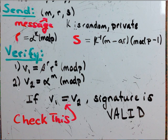The second calculation is V2 = alpha^M mod P. This is all public information because alpha and beta are public, and R, S, and M are public once the message is sent.